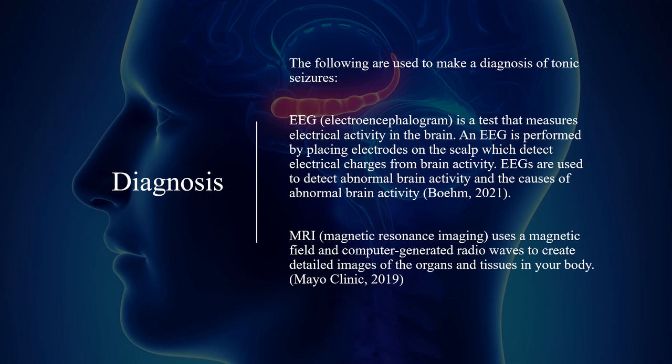The following are used to make a diagnosis of tonic seizures. An EEG (electroencephalogram) is a test that measures electrical activity in the brain, performed by placing electrodes on the scalp to detect electrical charges from brain activity. EEGs are used to detect abnormal brain activity and its causes. MRI (magnetic resonance imaging) uses a magnetic field and computer-generated radio waves to create detailed images of the organs and tissues in the body.